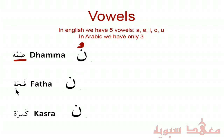Secondly, we have the Fathah. With Fathah, it's written as a line on top of the letter, and it has the sound of A — that would be Na. You can watch this video to listen to the letters of the alphabet being pronounced with a Fathah.